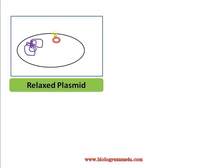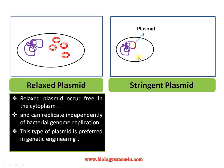In the case of a relaxed plasmid, the plasmids are seen free in the cytoplasm and can replicate independently of the bacterial genome replication. This type of plasmid is preferred in genetic engineering and is called a high copy number plasmid, as it is a self-replicating module.